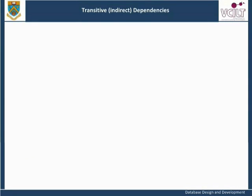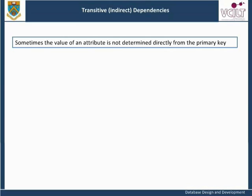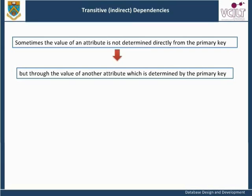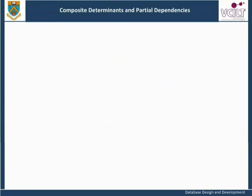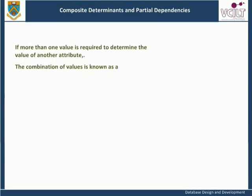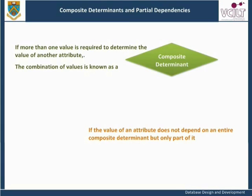Transitive: Sometimes the value of an attribute is not determined directly from the primary key, but through the value of another attribute which is determined by the primary key. This relationship is known as a transitive dependency. Composite Determinant: If more than one value is required to determine the value of another attribute, the combination of values is known as a composite determinant. Partial Dependency: If the value of an attribute does not depend on an entire composite determinant but only part of it, that relationship is known as a partial dependency.